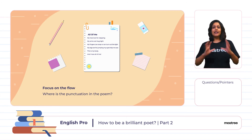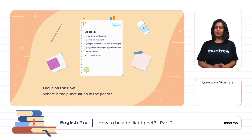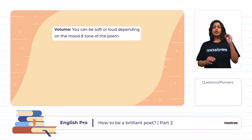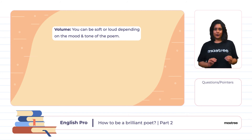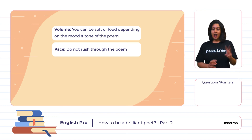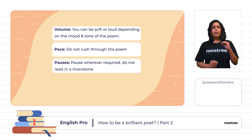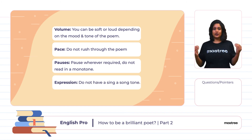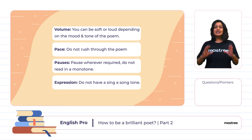Now let's look at some points to keep in mind while reciting the poem. First, the mood — you can be soft or loud depending on the mood and tone of the poem. Second, the pace — do not rush through the poem; take your time and enunciate. Third, pauses — pause wherever required. Fourth, do not read in a monotone. Fifth, expressions — do not have a sing-song tone.